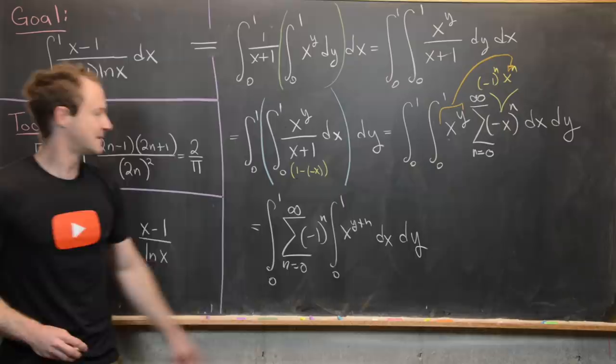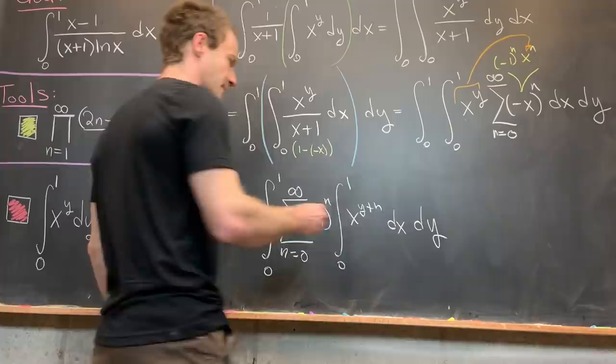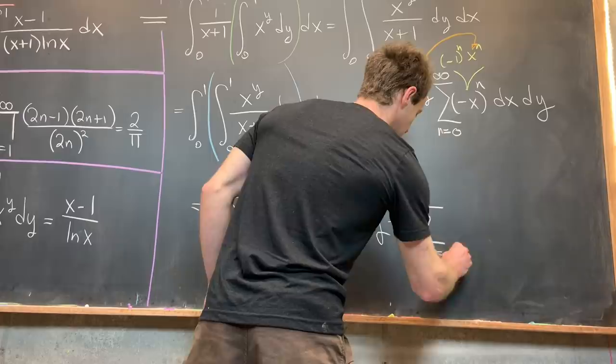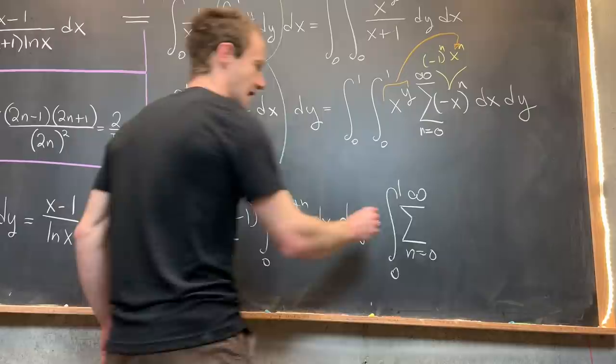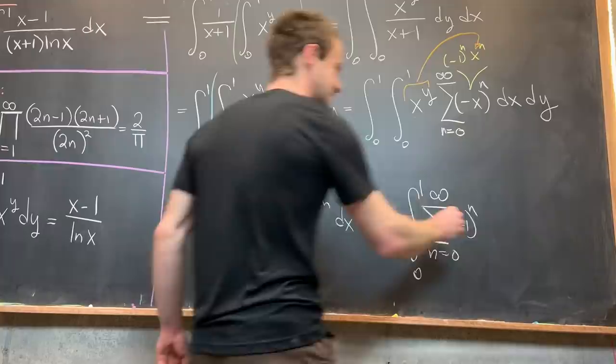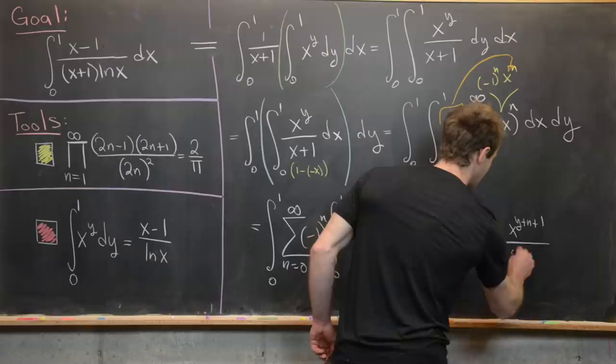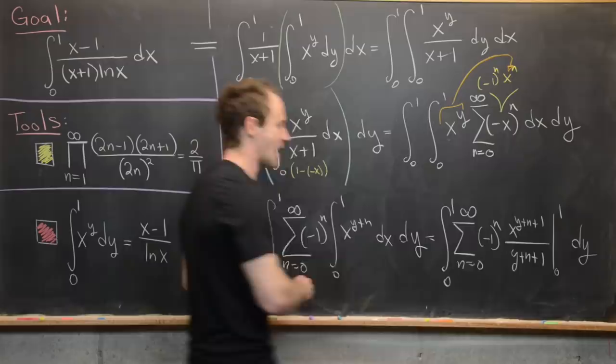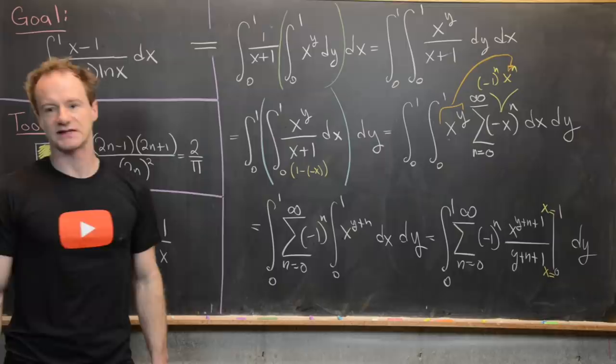We take the antiderivative with respect to x. Since the exponent y plus n is never negative 1, we use the power rule. That gives the integral from 0 to 1 in y, times the sum n equals 0 to infinity of minus 1 to the n, times x to the y plus n plus 1 divided by y plus n plus 1, evaluated at x equals 0 and x equals 1.